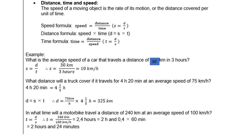What distance will a truck cover if it travels 4 hours 20 minutes at an average speed of 75 kilometers per hour? Take note — we are dealing with different units: minutes and hours. So we need to convert the minutes into hours. 4 hours 20 minutes is 4 and a third hours. The formula for distance is speed multiplied by time, so distance equals 75 times 4 and a third, which gives 325 kilometers.